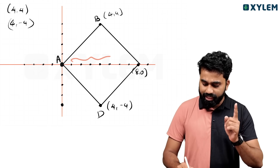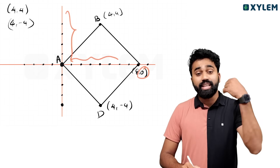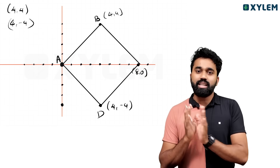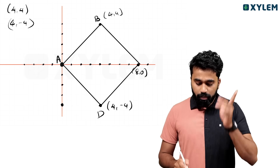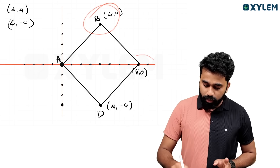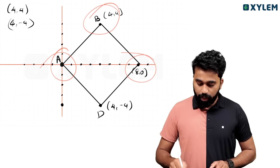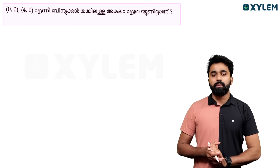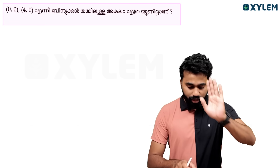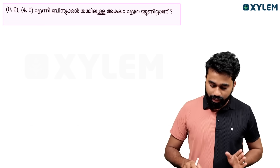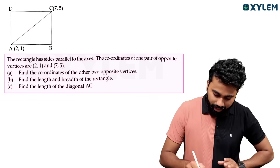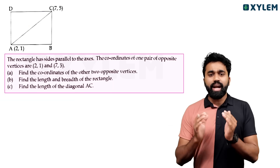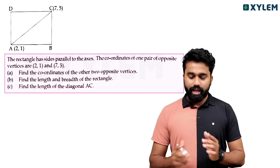Any point on the x-axis has y equal to 0. Any point on the y-axis has x equal to 0. Now I will tell you the chapter concepts. You will see one rectangle with two opposite corners — this is the important idea.